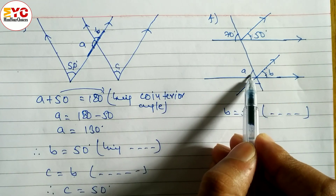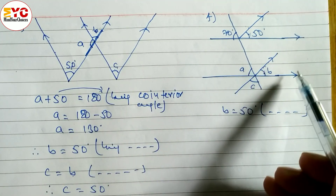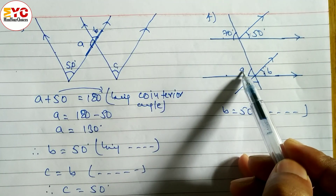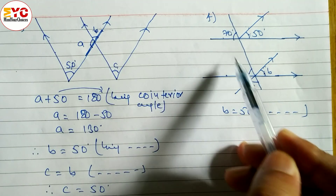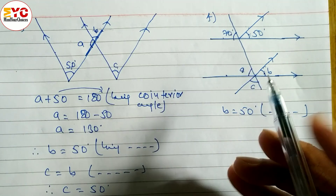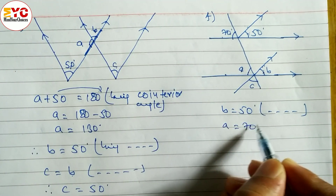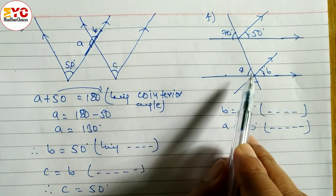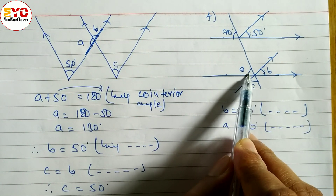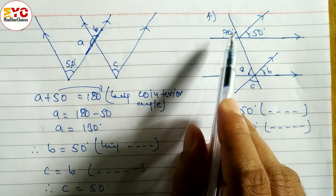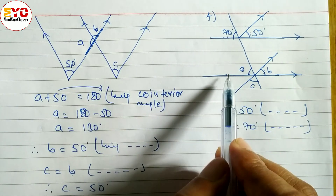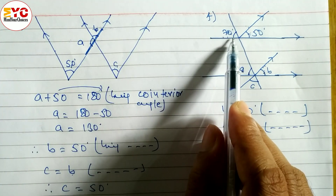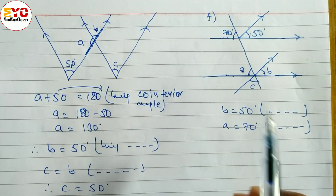Now, a is equal to 70. You can see here these two lines are parallel — this and this line are parallel. One angle is inside, one is outside. So we can write a is equal to 70. a is equal to 70 degrees. Reason same: being corresponding angle. Corresponding angle means one angle is inside and one is outside of parallel lines. So a is inside and 70 is outside of these two parallel lines.